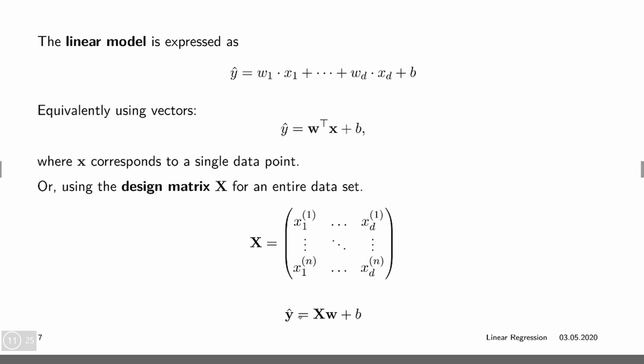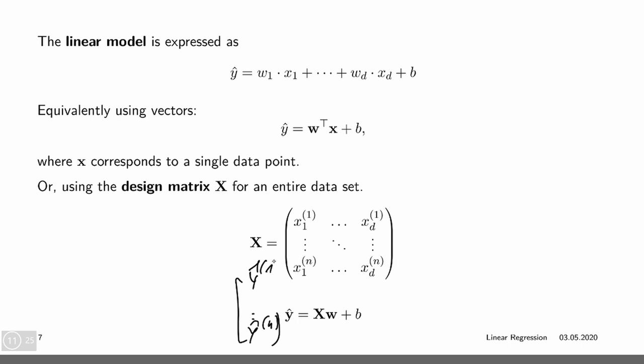We can write our predicted target variable for the whole training data. So y-hat is now a vector: y-hat 1 through y-hat n. In order to assess the quality of a model, we need to define an objective function. We agreed on using a loss function where a smaller loss means a better model.